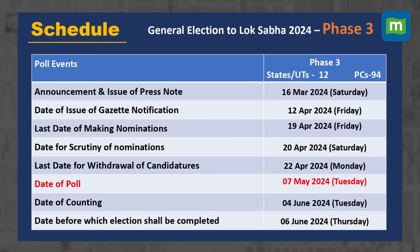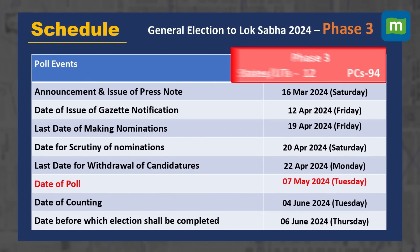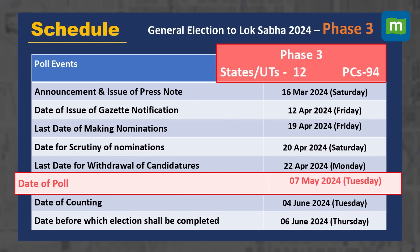Polling under phase 3 will be conducted on 7th May 2024. In phase 3, 94 parliamentary constituencies of 12 states and union territories will go under polling.